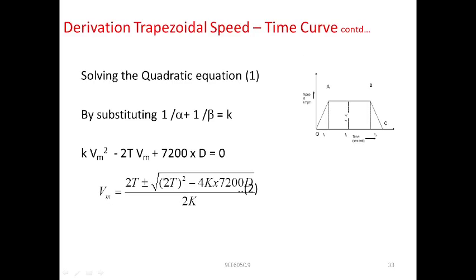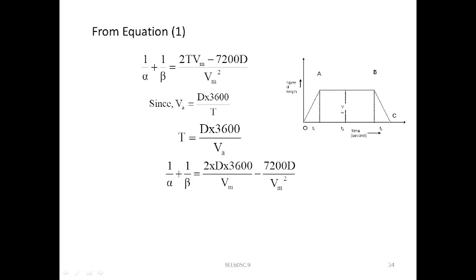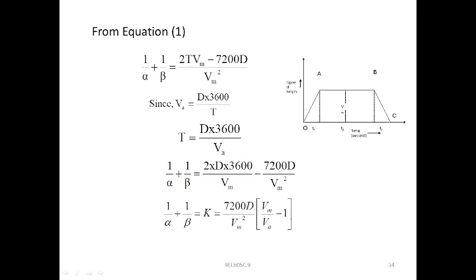From equation 1, we can also express 1/α + 1/β in terms of D and T. Since the average speed Va = D × 3600 / T, substituting gives T = D × 3600 / Va. Using different equations, we can find the K value and the maximum speed Vm. For calculating 1/α and 1/β values individually, we need to derive separate equations. Thank you.